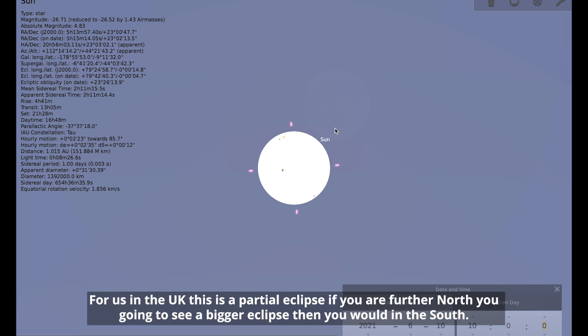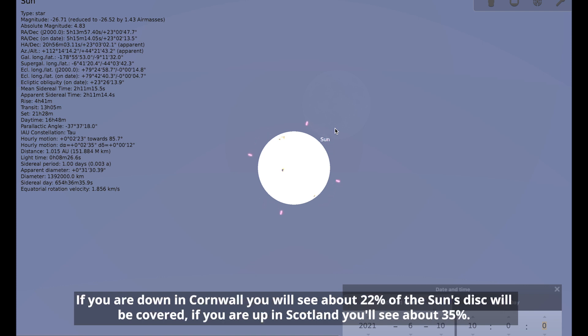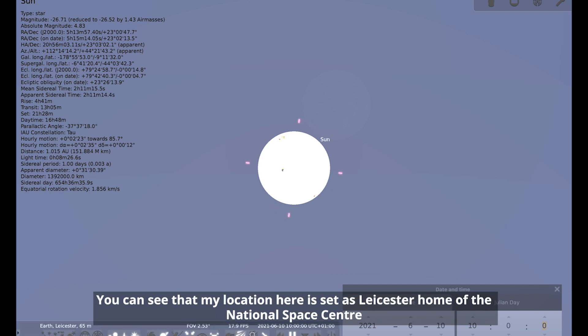So for us in the UK, this is a partial eclipse. If you're further north, you're going to see a bigger eclipse than you would in the south. If you are down in Cornwall, you will see about 22% of the sun's disc will be covered. If you are up in Scotland, you'll see about 35%. My location here is set as Leicester, home of the National Space Centre.